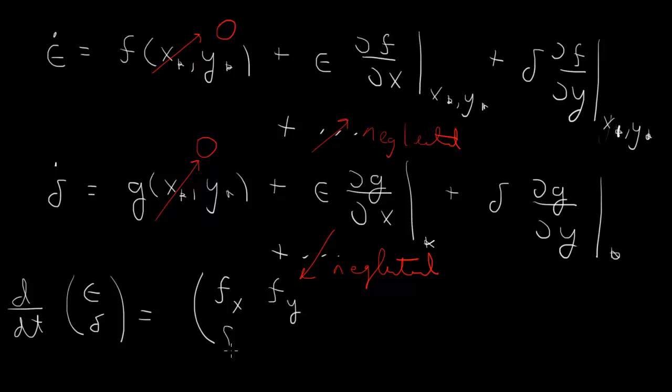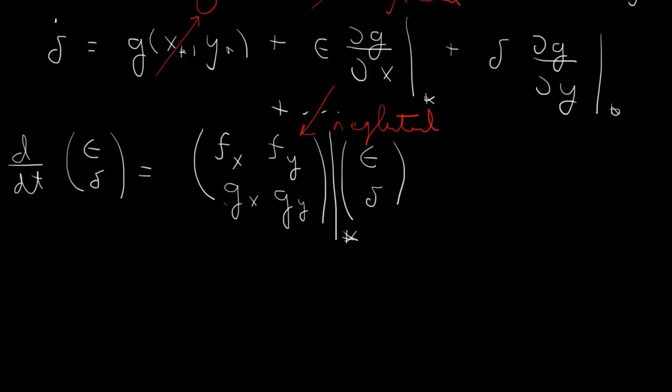Partial of g with respect to x, and partial of g with respect to y. That times epsilon, delta. And this matrix here, everything is evaluated at x star and y star. So let me just put star there.